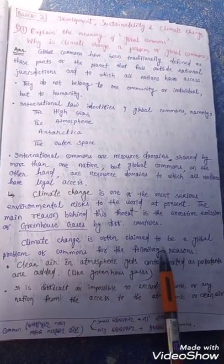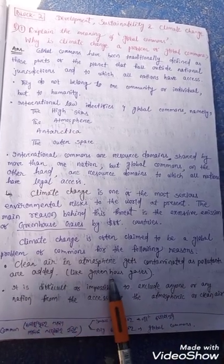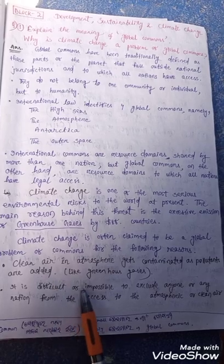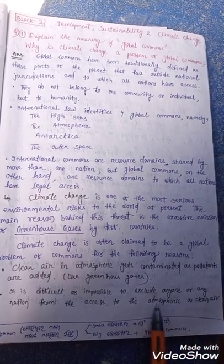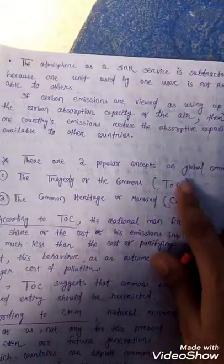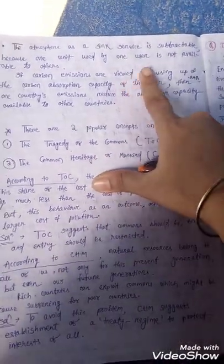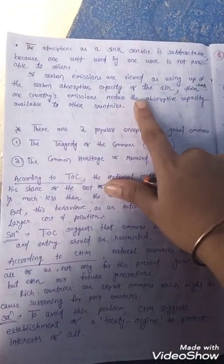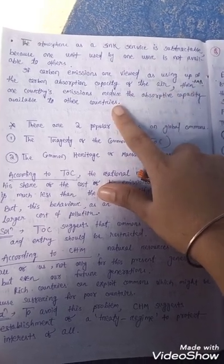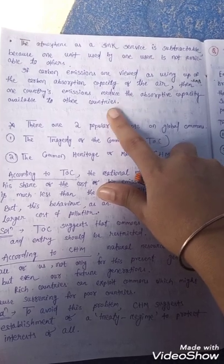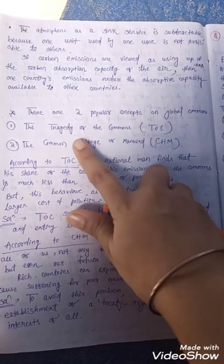Climate change is often claimed to be a global problem of commons for the following reasons: First, clean air in the atmosphere gets contaminated as pollutants like greenhouse gases are added. Second, it is difficult or impossible to exclude anyone or any nation from access to the atmosphere or clean air. Third, the atmosphere as a sink service is subtractable - one country's carbon emissions reduce the absorptive capacity available to other countries.